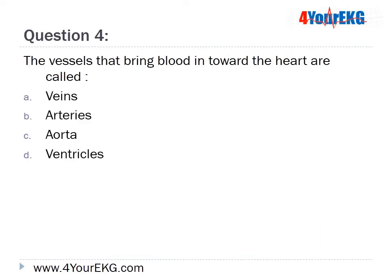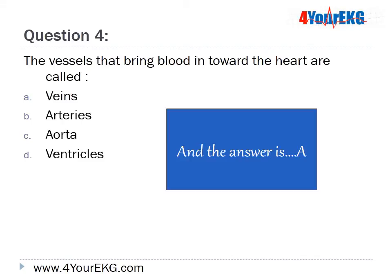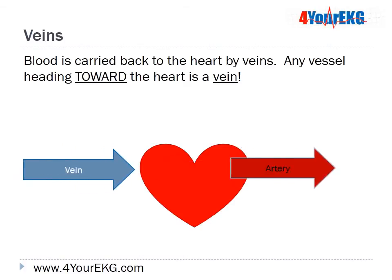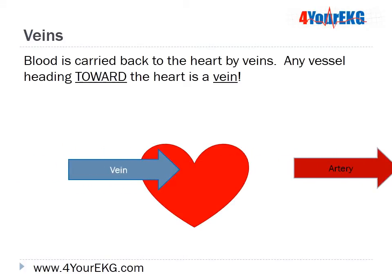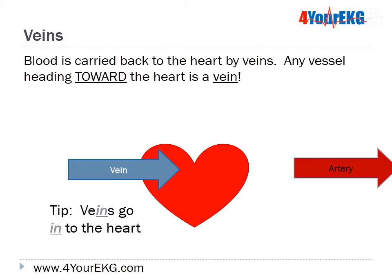Question 4: The vessels that bring blood in toward the heart are called — A. Veins, B. Arteries, C. Aorta, or D. Ventricles. The answer is A — Veins. Blood is carried back toward the heart by veins, so any vessel heading toward the heart will be a vein. Remember: the word 'vein' has the word 'in' in it, so veins go into the heart.